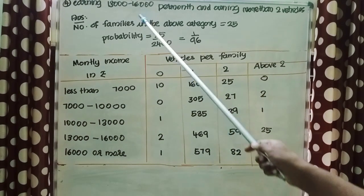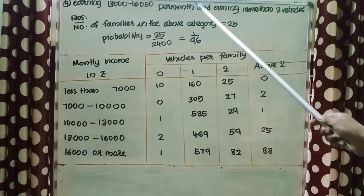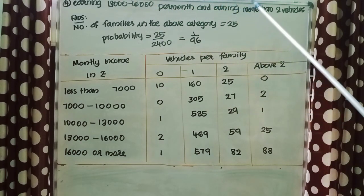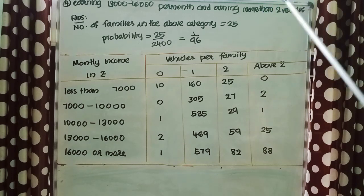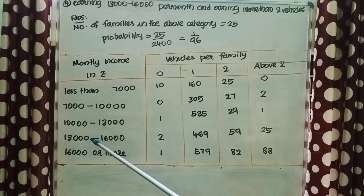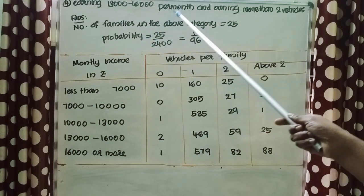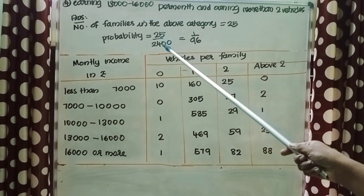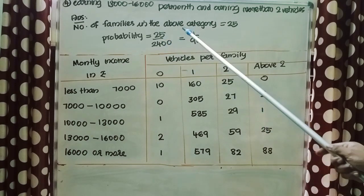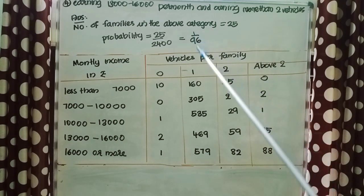Fourth question: probability of a family earning 13,000–16,000 per month and owning more than 2 vehicles. Number of families in this category = 25. So probability = 25/2,400, which simplifies to 1/96.